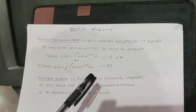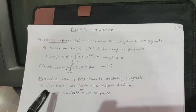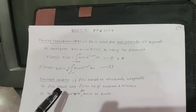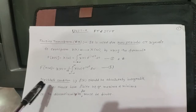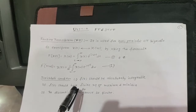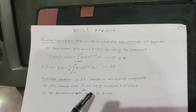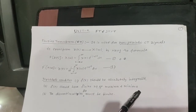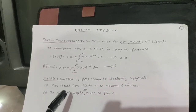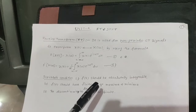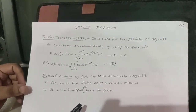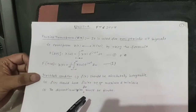To find the Fourier transform, there are certain conditions called Dirichlet conditions. The signal must satisfy these conditions before we can apply the Fourier transform. First, f(t) should be absolutely integrable. Second, f(t) should have a finite number of maxima and minima. Third, the discontinuities of f(t) must be finite.